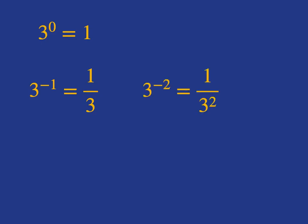3 to the negative 2, the negative means 1 over, so we've got 1 over 3 squared, which is 1 over 9. And then in fact if we have 1 over 3 to the negative 2, well 3 to the negative 2 is going to be 1 over 3 squared, so we've got a fraction over a fraction.